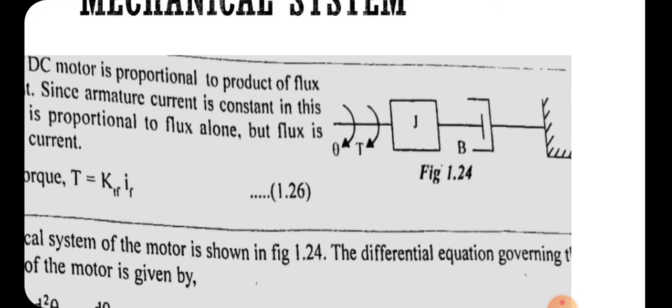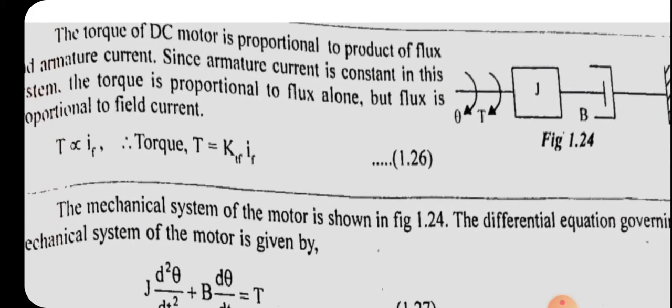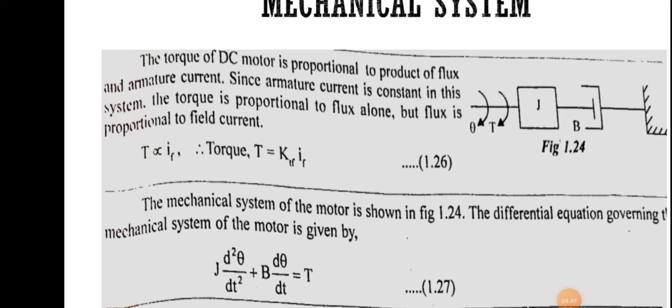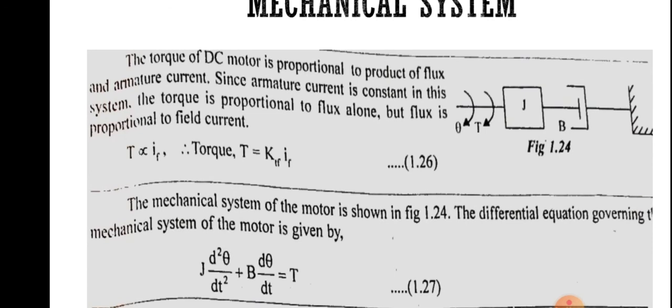The mechanical system consists of moment of inertia J and friction coefficient B. Applying Newton's second law of motion, the differential equation governing the mechanical system is: J·(d²θ/dt²) + B·(dθ/dt) = T, where T is the applied torque and θ is the angular displacement. This is Equation 1.27.